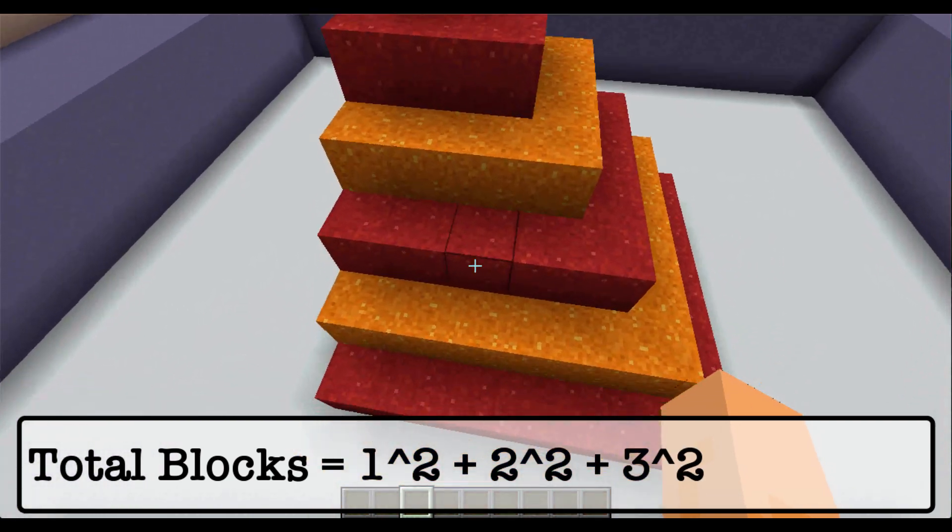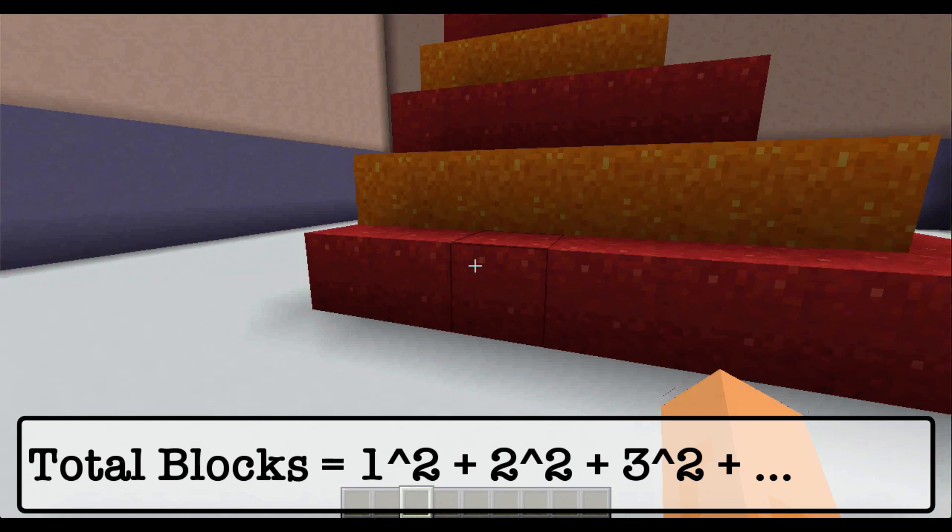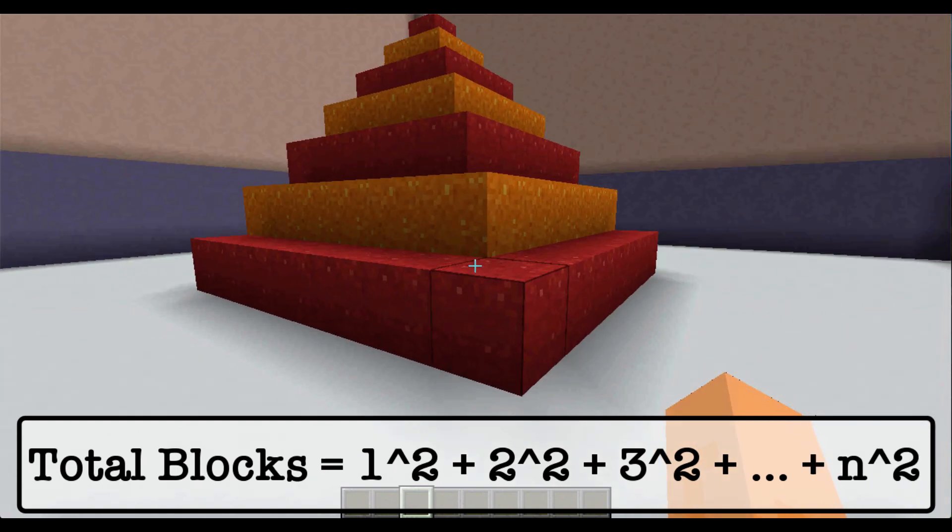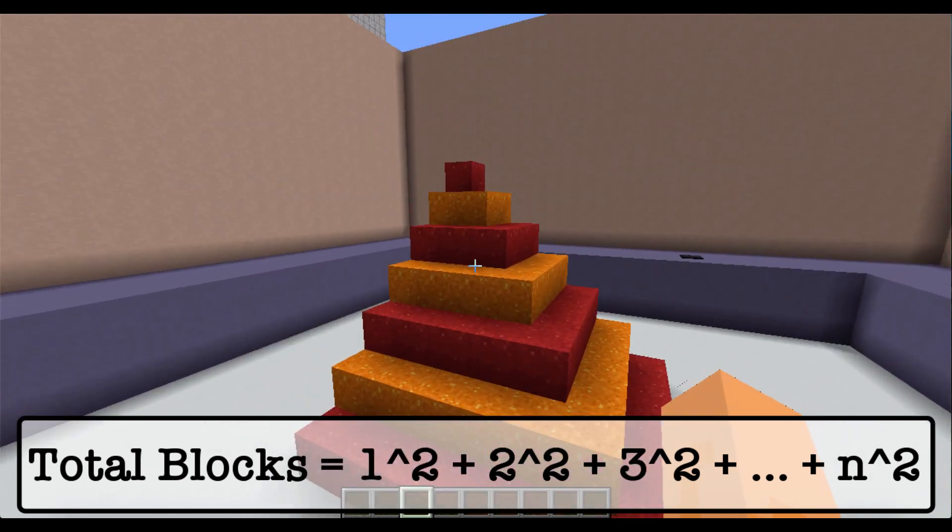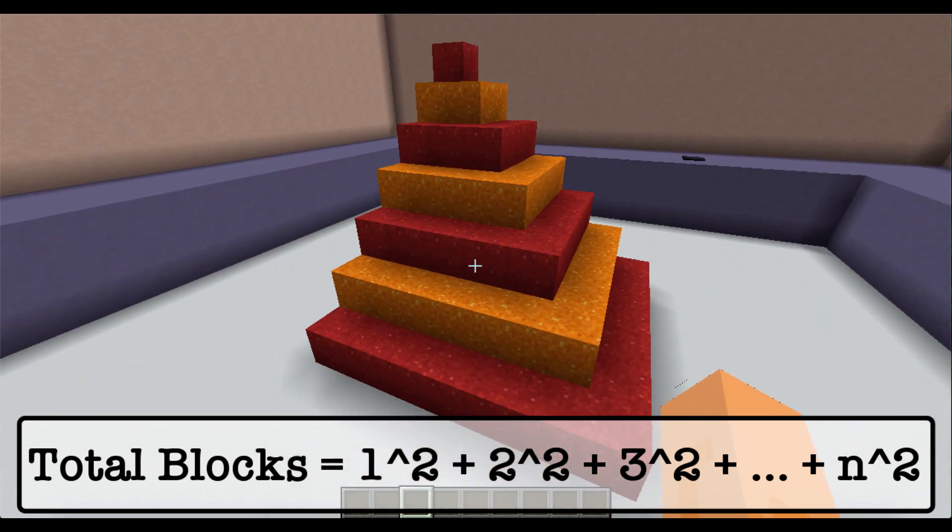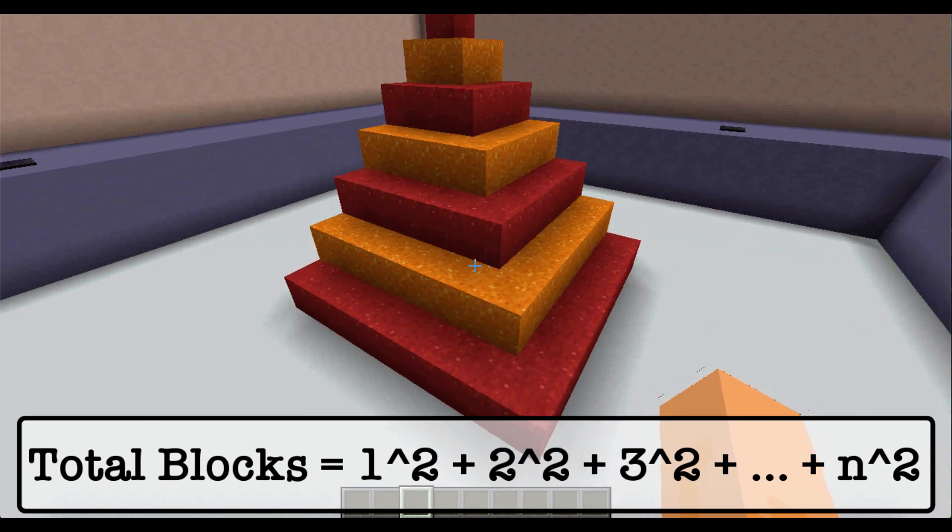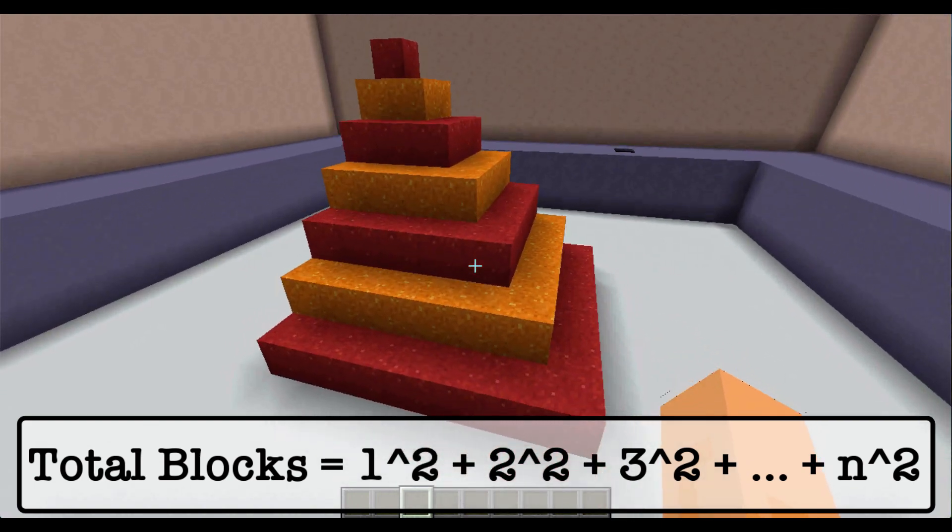And then all the way down to the bottom layer, which in this case is a 7 by 7 square. But it could be an n by n square. So the total number of pieces of concrete powder in this pyramid is the sum of the first n squares.